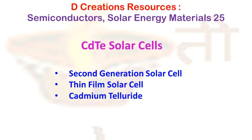CdTe solar cells. Welcome to Decreations Resources. While talking about the second generation solar cells, one prominent name comes up and that is cadmium telluride solar cells, which is CdTe. This particular technology was first introduced in 1972 when Bonnet and Rabenhoist designed the CdS-CdTe heterojunction that allowed the manufacturing of CdTe solar cells.